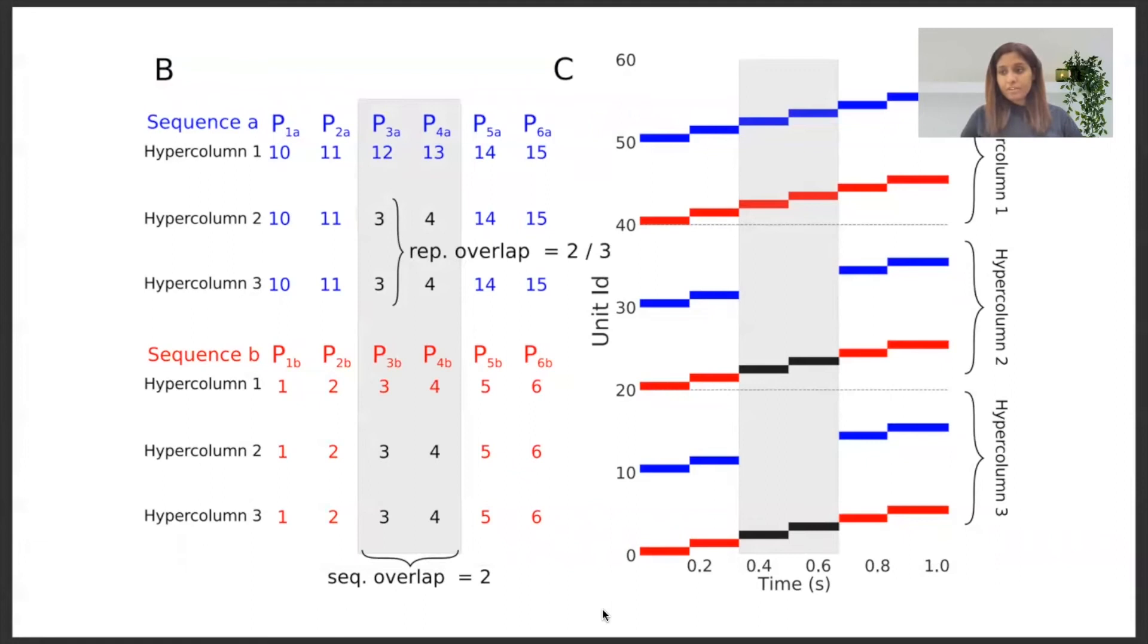When we compare the patterns P3a, it's 1, 2, 3, and 3. And when we look at P3b, it's 3, 3, 3. We see that they both have the same unit activation in the last two hypercolumns, hypercolumn 2 and hypercolumn 3, implying that the pair has the representational overlap 2/3.